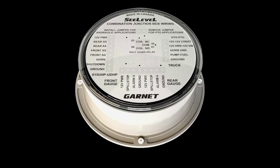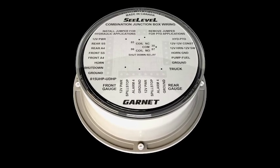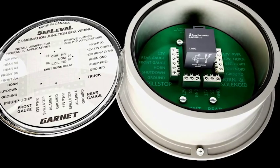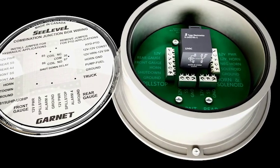To simplify the wiring process, Garnet offers the 815 JBHD junction box, which clearly identifies all wiring connections.